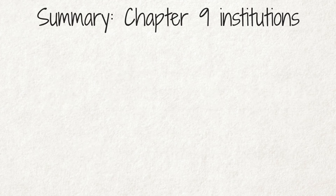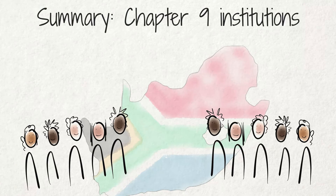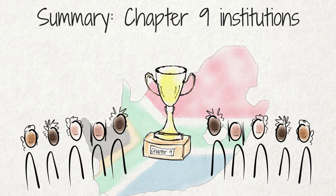Summary. The Constitution created a set of independent Chapter 9 institutions to protect our democracy and human rights. Each institution plays a different role. Some receive complaints from the public while others assist in other ways. All Chapter 9 institutions are meant to be champions of the people and of the South African democracy.